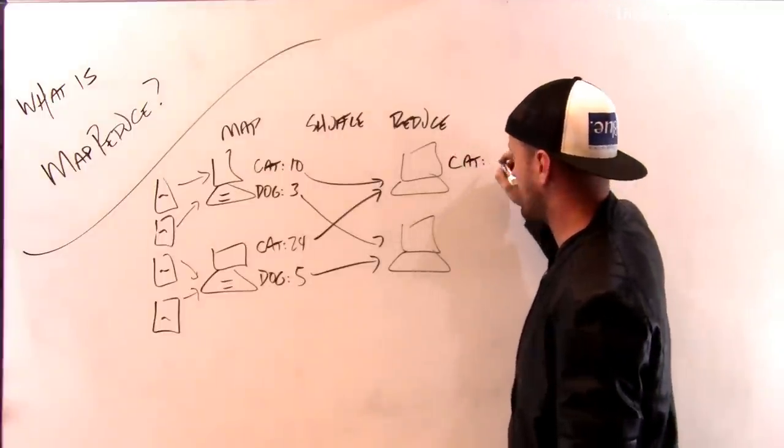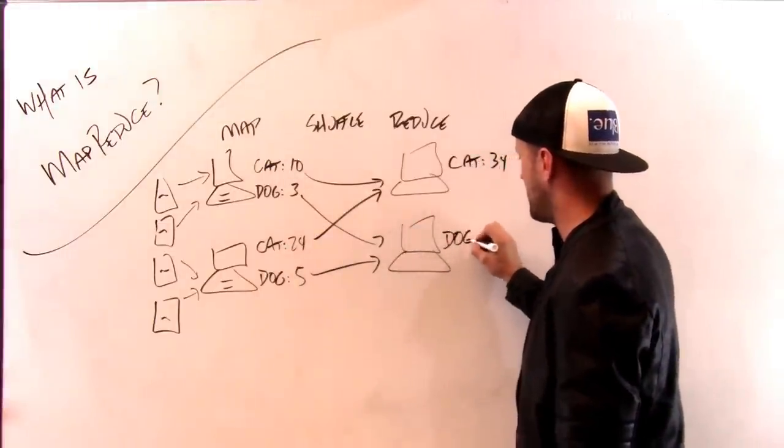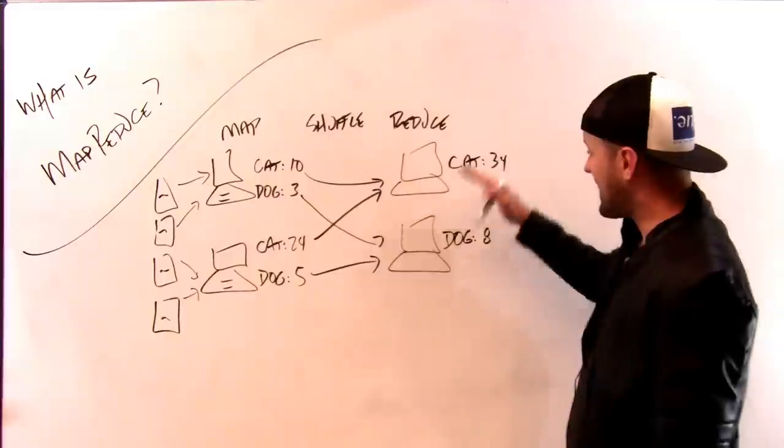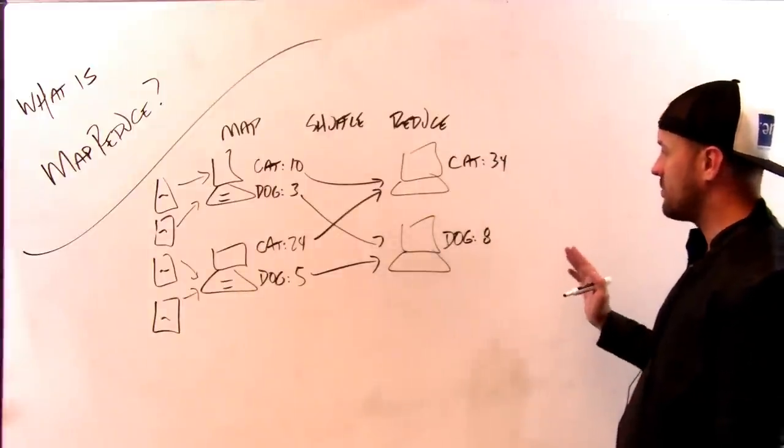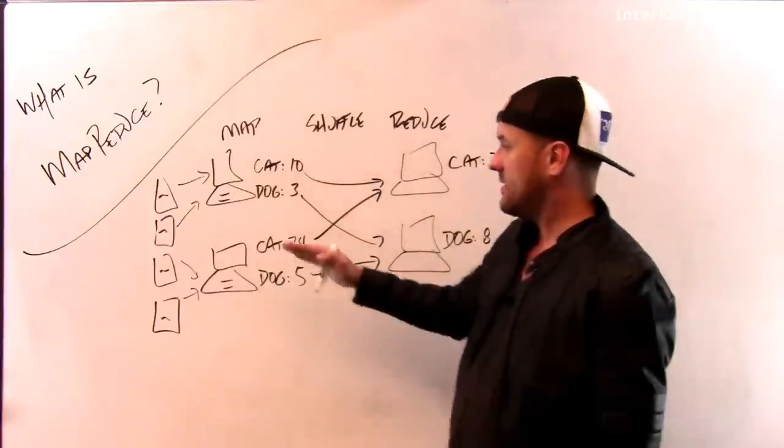This reducer would produce cat thirty-four, and I've got dog five and dog three, so this reducer would produce dog eight. And then I'm done. So now I have what I wanted, which is a key value map of the time that every word in these documents appeared.